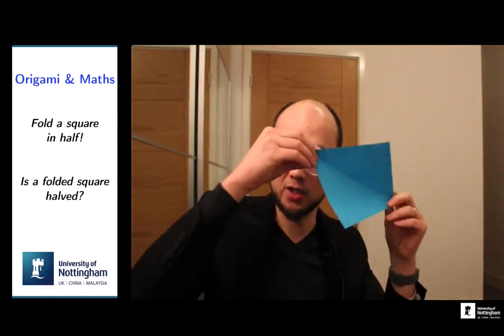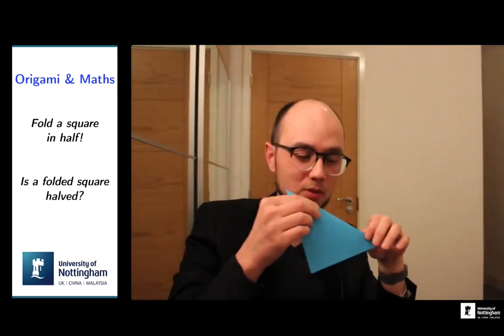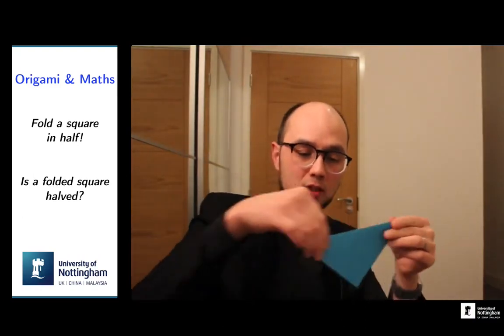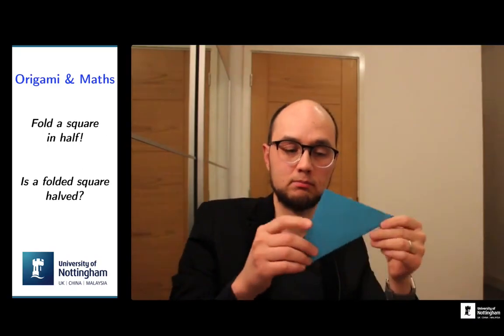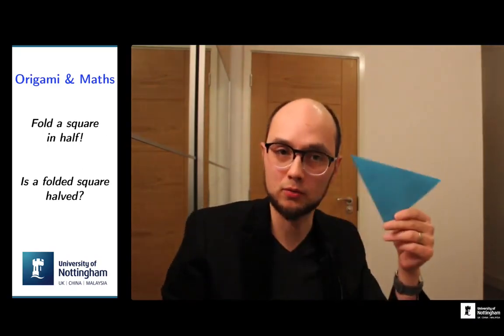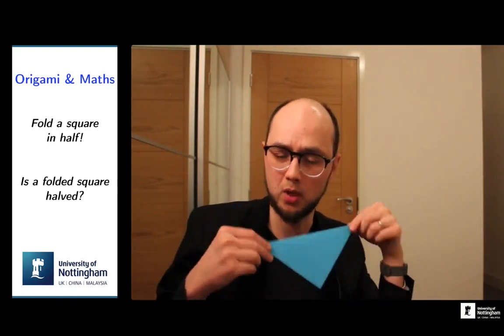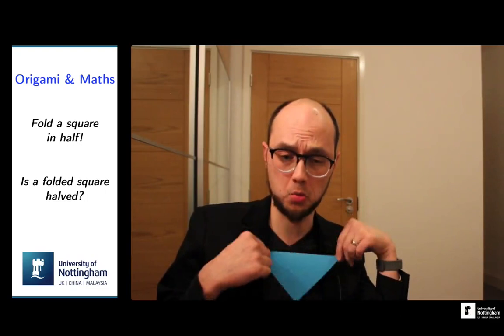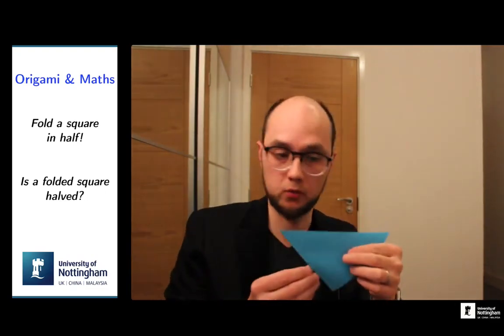What other folds can you do starting from a square? Let's fold diagonally — did you think of that one? That is an interesting one. If you fold diagonally, you get a triangle fold. Some people call it a nappy fold, though I'm not sure why.